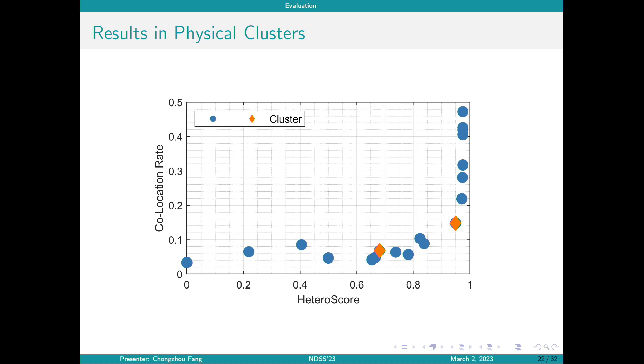The results from the cluster in Cloud Lab are shown on this page. We can see that the collocation rate shows a similar trend, where as heteroscore becomes higher and higher, the success rate of collocation attack also becomes higher.